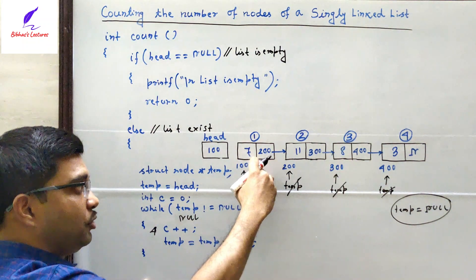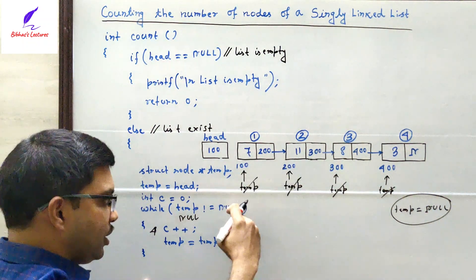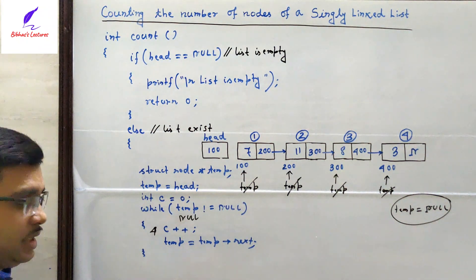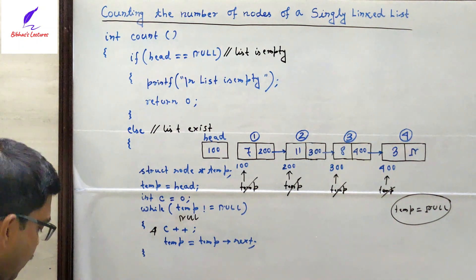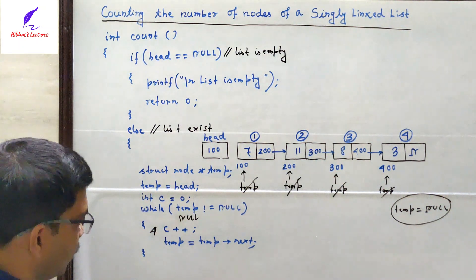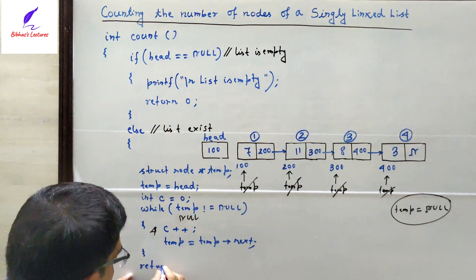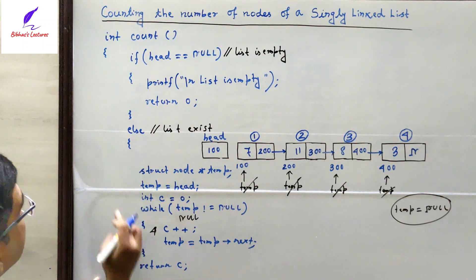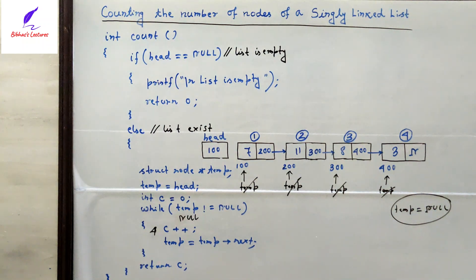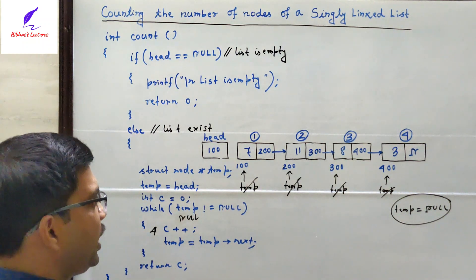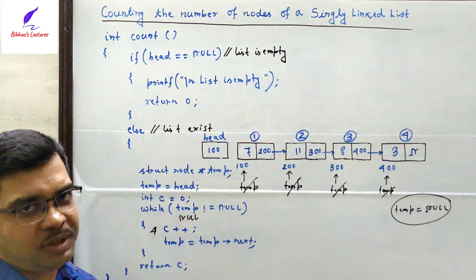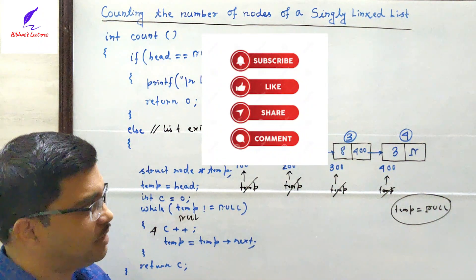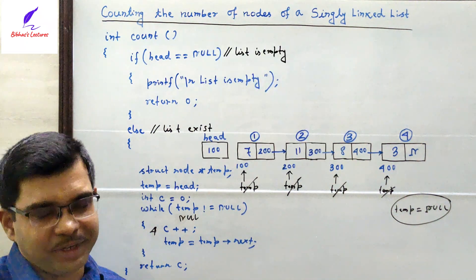We have started from the beginning and counted each and every node one by one. After counting each node, we shifted the temp pointer, traversed the entire list, and finally counted all the nodes. After the loop, we just return the value of c. Outside the loop, write return c. That is the end of the else block and the end of the count function. In this way, we have counted all the nodes of the singly linked list. I hope you have understood the concept of the count function. Thanks for watching, please take care, have a nice day.